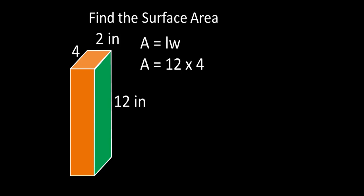So here's our area. We have our length of twelve and our width of four. We multiply those together. That'll give us forty-eight square inches. That is the area of that rectangle I've represented in green.